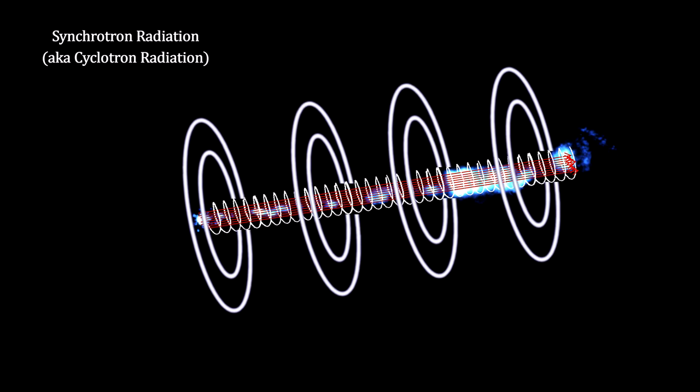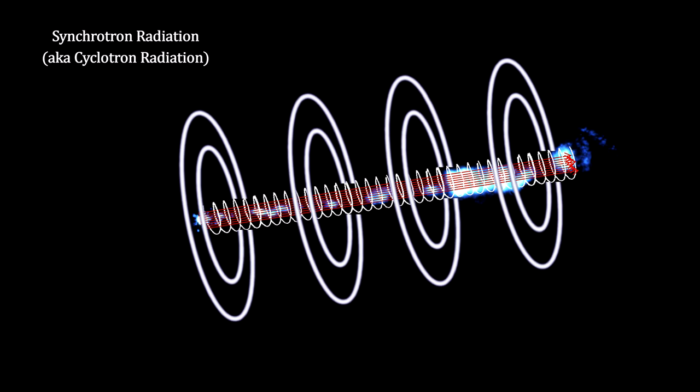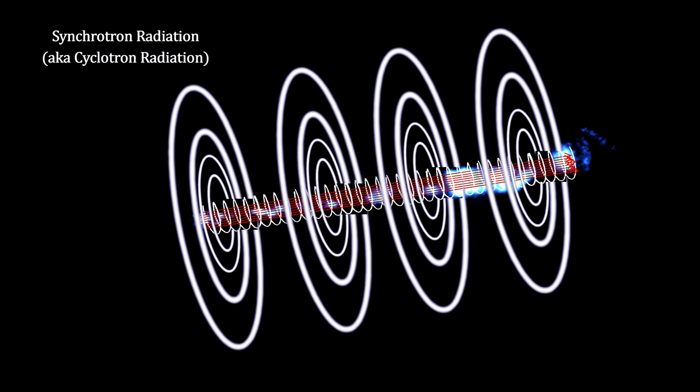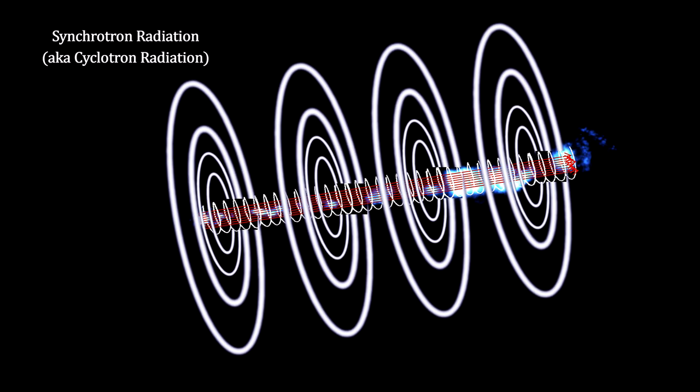These circularly accelerating ions create electromagnetic radiation across a wide spectrum, including radio, visible, and x-ray light. This is what we are seeing with our radio, optical, and x-ray telescopes.